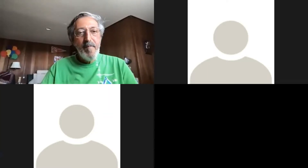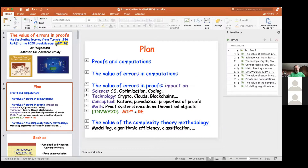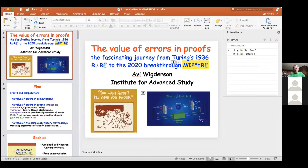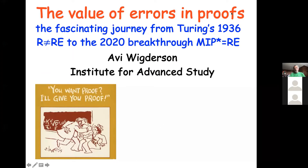Avi begins: Thanks for inviting me. I'm going to tell you about the value of errors in proofs. It's more of a story about the evolution of the notion of proof within computational complexity theory, which is my area.